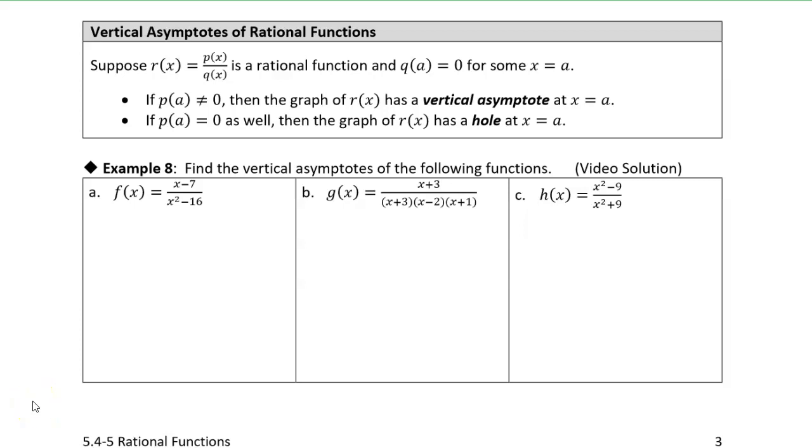All right, so the next thing we're going to look at is what happens when the denominator of a rational function is zero. Now, you probably know that you cannot divide by zero. You can't divide anything by zero.